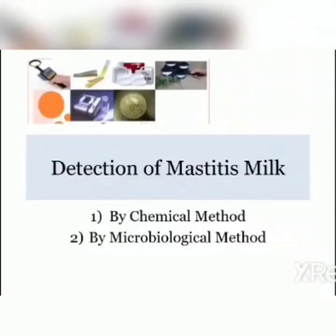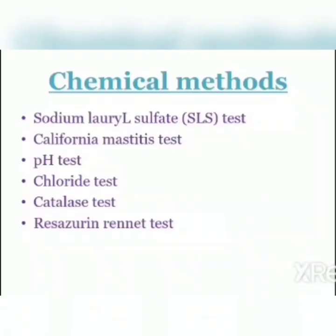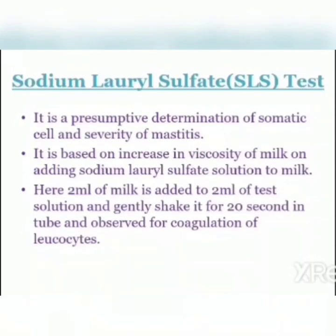Now, detection of mastitis milk involves two methods: first, chemical method, and second, microbiological method. The chemical method includes various tests: namely the Sodium Lauryl Sulfate Test (SLST), California Mastitis Test, pH test, Chloride test, Catalase test, and Resazurin-Rennet test. The SLST test is used to detect mastitis milk by presumptively determining somatic cell count in milk.